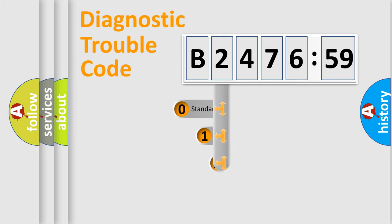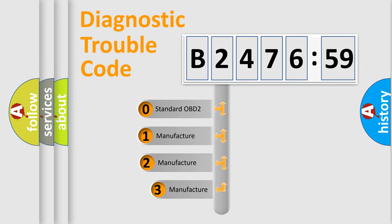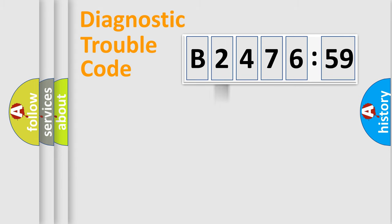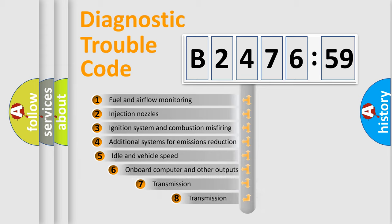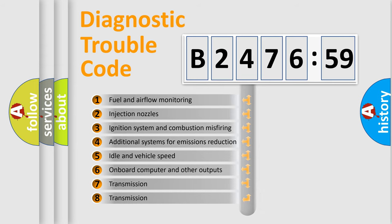Powertrain, Body, Chassis, Network. This distribution is defined in the first character code. If the second character is expressed as zero, it is a standardized error. In the case of numbers 1, 2, 3, it is a more prestigious expression of the car-specific error.